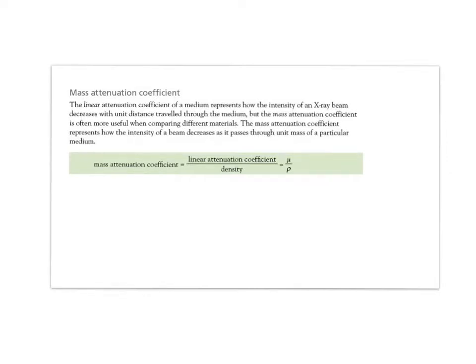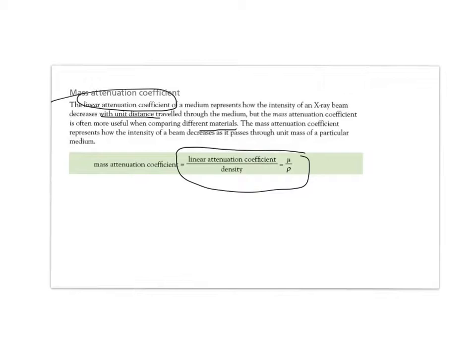Let's carry on where we left off. We talked about attenuation coefficients — more importantly, the linear attenuation coefficient, which tells you about the intensity of an x-ray beam and how it decreases with unit distance. The mass attenuation coefficient is more often useful because it allows you to compare different materials. It represents how the intensity of the beam decreases as it passes through a unit mass of a particular medium. You can work it out by using the linear attenuation coefficient divided by the density.